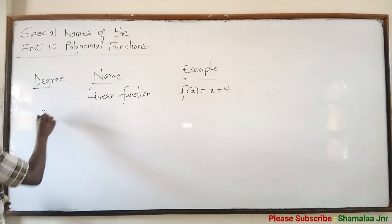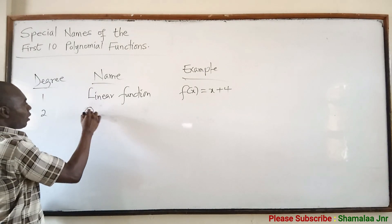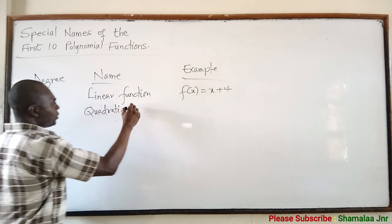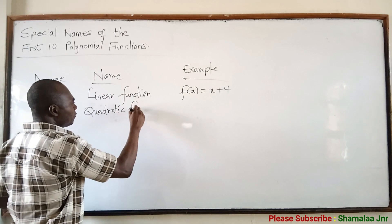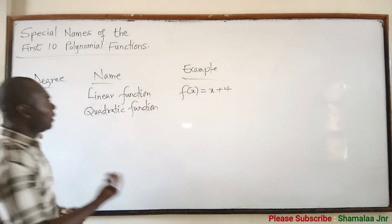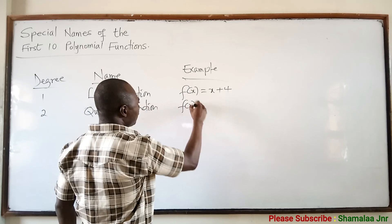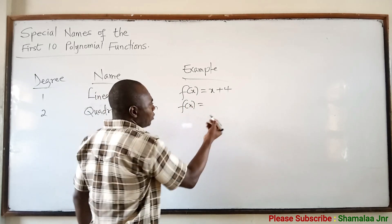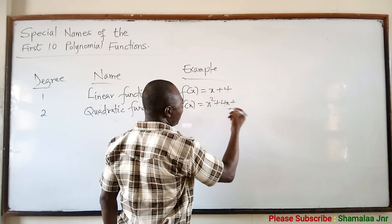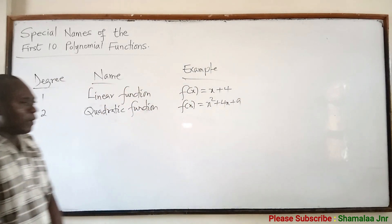When the degree is 2, then we say that it is a quadratic function. For example, L(x) = x² + 4x + 9. This is a quadratic function because the degree is 2.